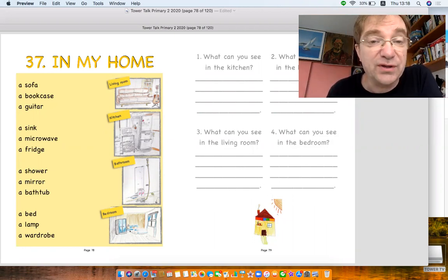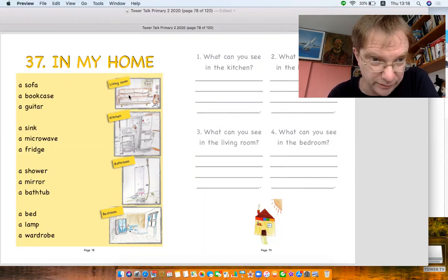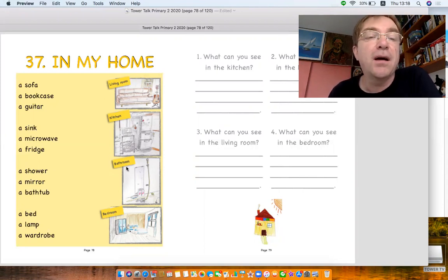Now, this is all about number 37, in my home, and maybe in your home you have the same things too. Now look, we've got four different rooms. We've got a living room, a kitchen, not chicken, kitchen, bathroom and bedroom.